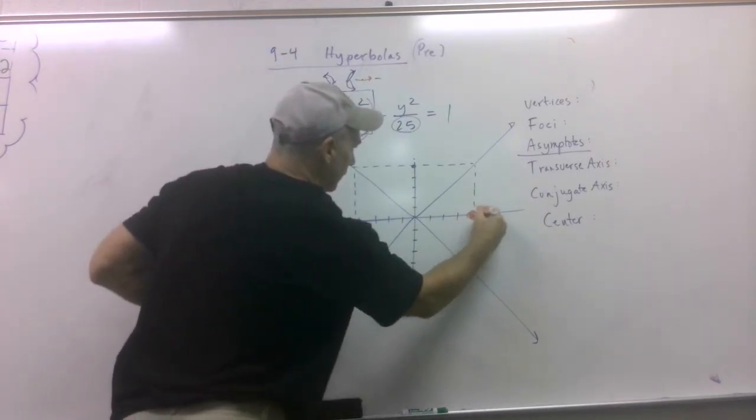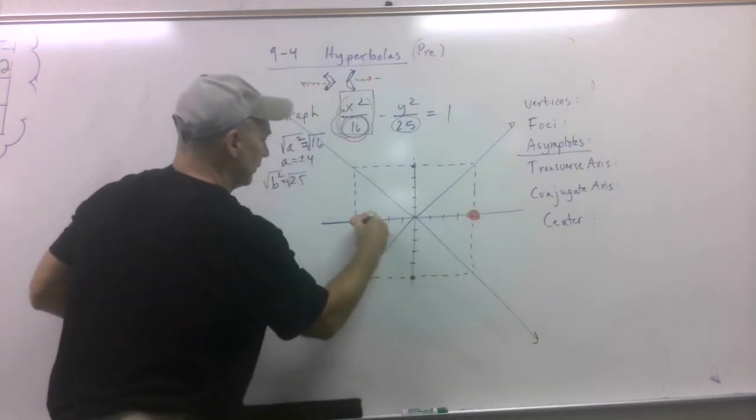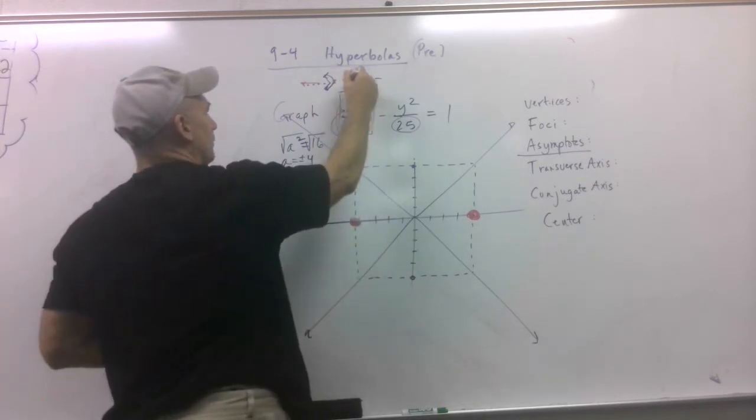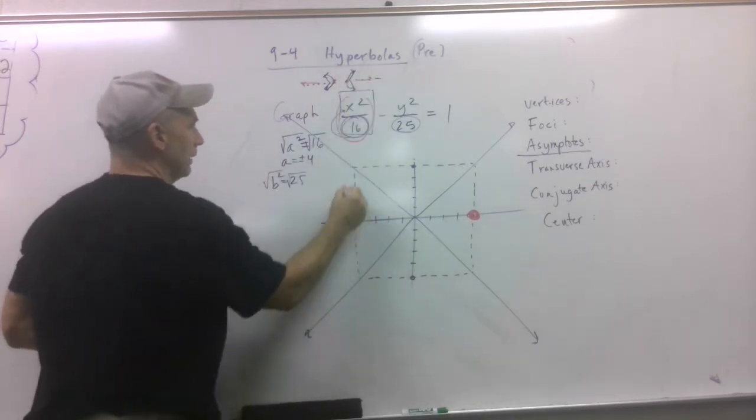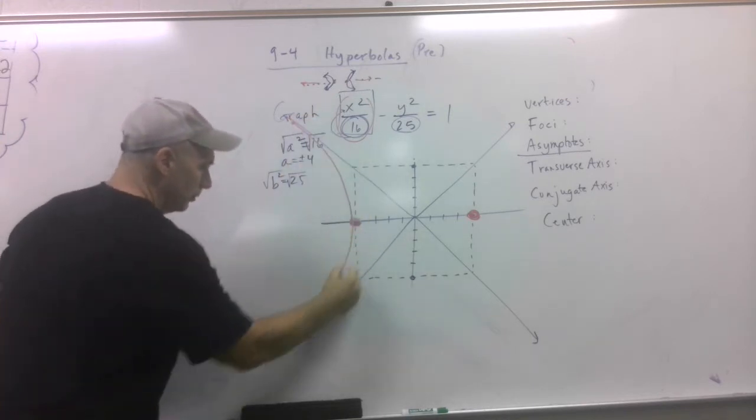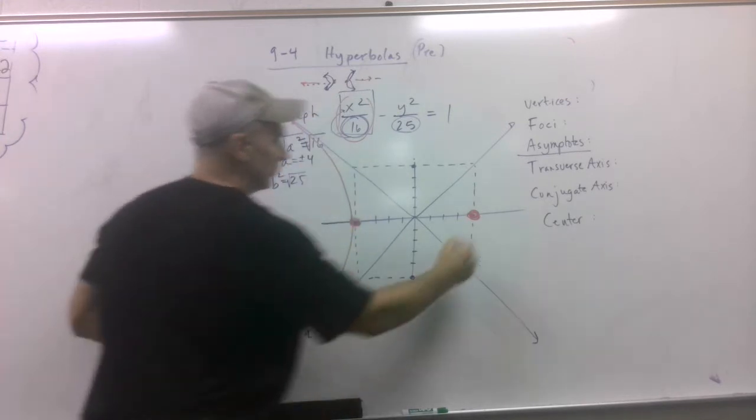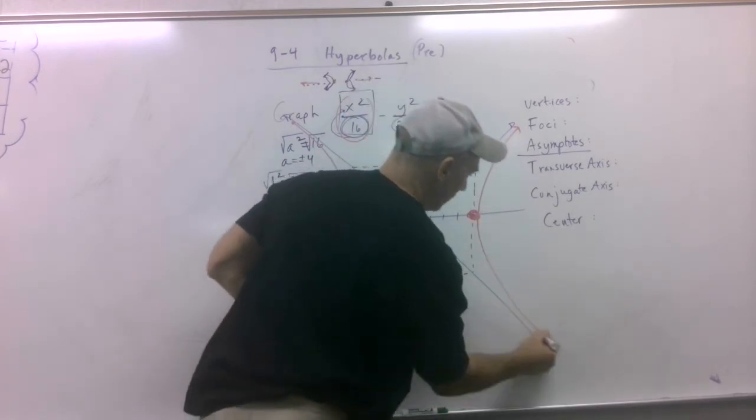Now this and this are going to be our vertices. That's this dot and that dot. So now I'm like, oh, okay. Now I'm going to follow the asymptotes. And I'm going to go like this and I'm going to go like this.